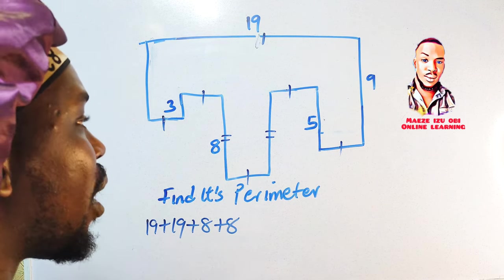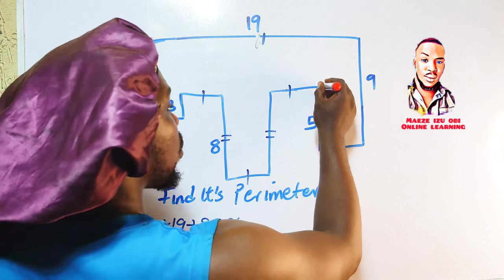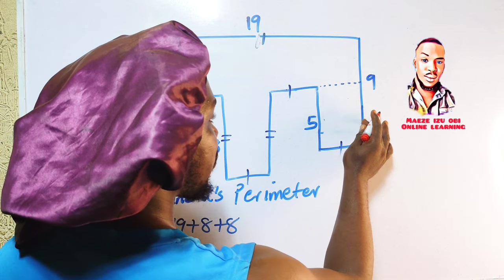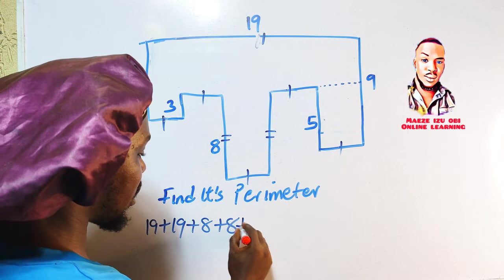Now the next thing we need to observe, now where the problem starts coming, is from here. Because now I'm going to draw something like this. Now look up, here is 5, here is 5, and here is 4. So from here to here automatically is 9. We write plus 9.